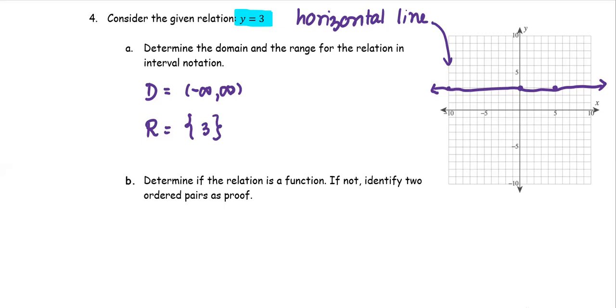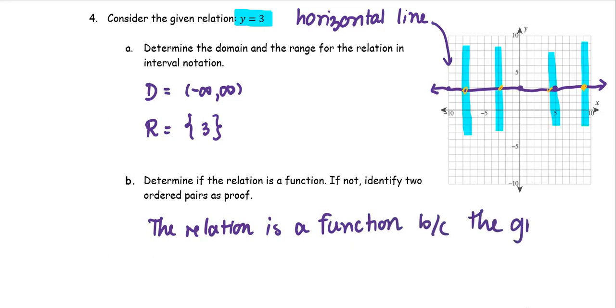In part b, we determine if the relation is a function. If not, identify two ordered pairs as proof. We're going to use the vertical line test. It happens to be for any vertical line that we use for the process of vertical line test, there is only one intersection point. Therefore, this graph passes the vertical line test. So we can say the relation is a function because the graph passes the vertical line test.